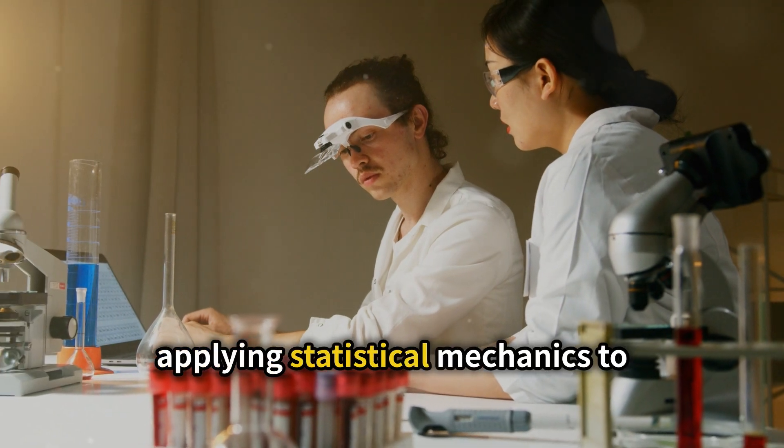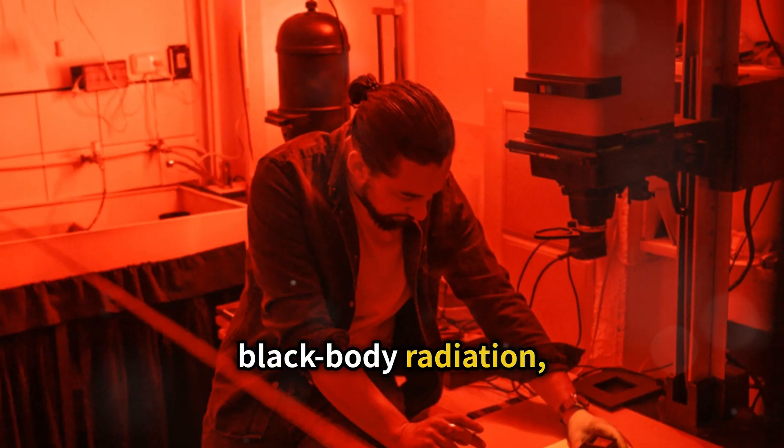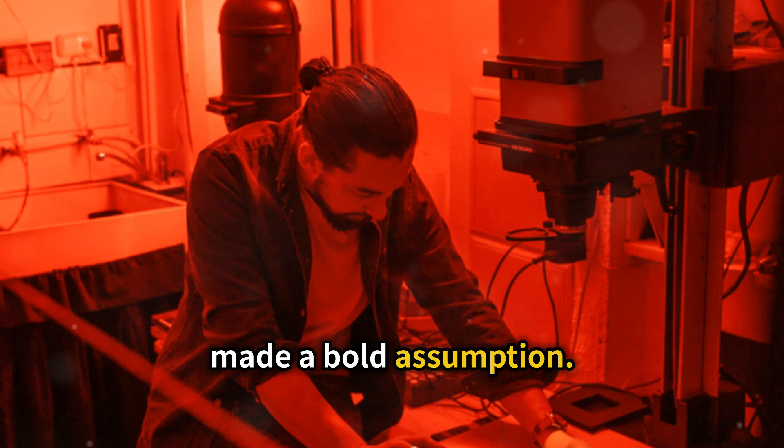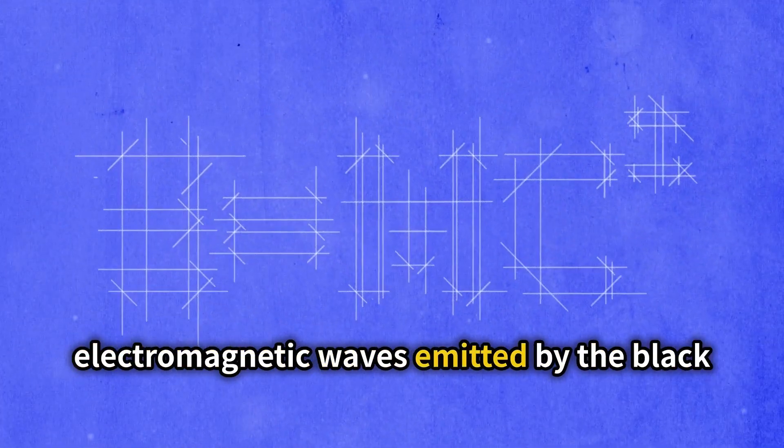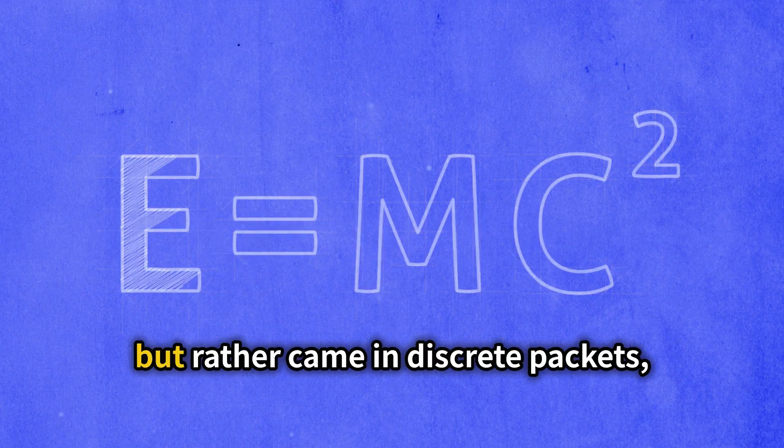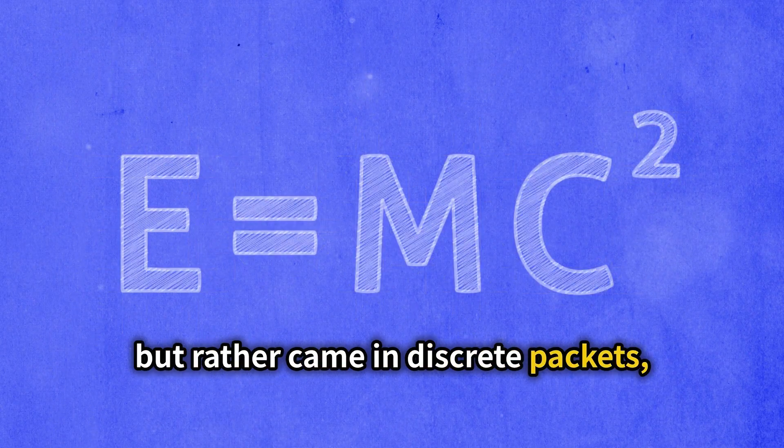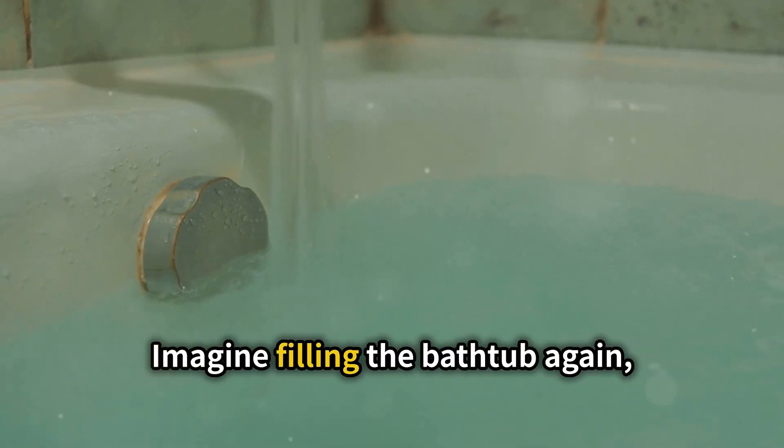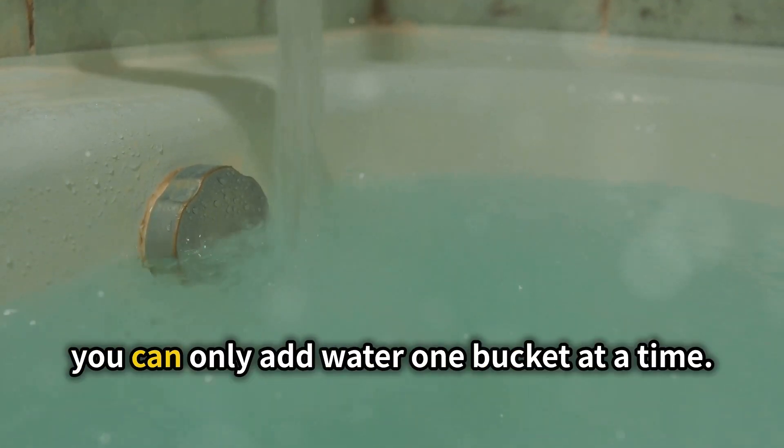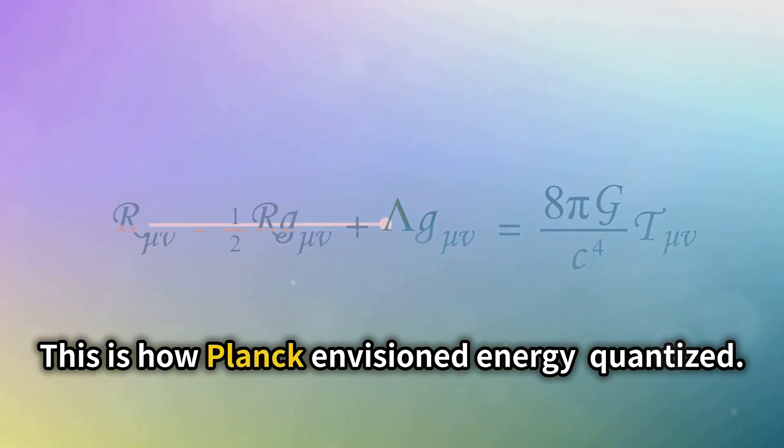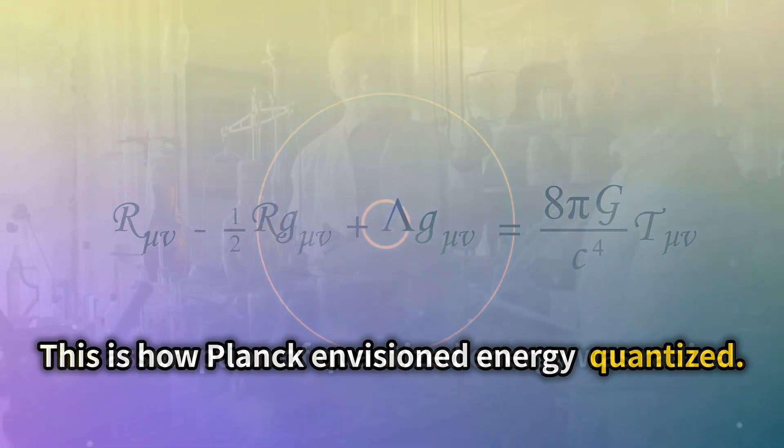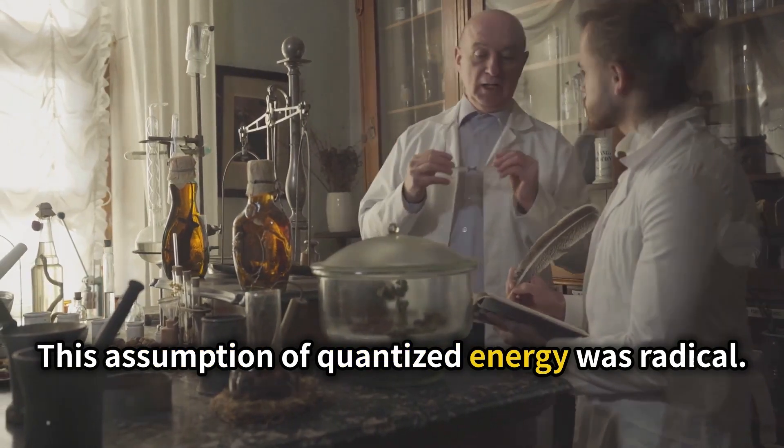Planck, applying statistical mechanics to black body radiation, made a bold assumption. He proposed that the energy of the electromagnetic waves emitted by the black body was not continuous, but rather came in discrete packets, or quanta. Imagine filling the bathtub again, but this time you can only add water one bucket at a time. The water level no longer rises continuously, but jumps up in discrete steps. This is how Planck envisioned energy quantized. This assumption of quantized energy was radical.